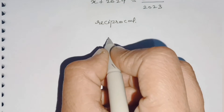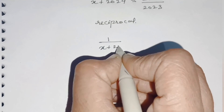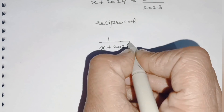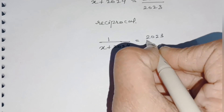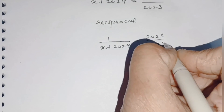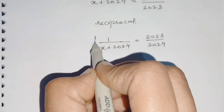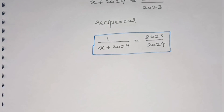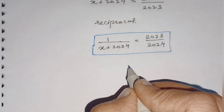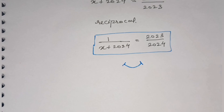Now again we can take the reciprocal of both sides, so we get 1 over (x + 2024), which is what we required, is equal to 2023 over 2024. Therefore our final answer is 2023 over 2024. Hope you like my explanation. Please like, share, and subscribe to my channel. Thank you.